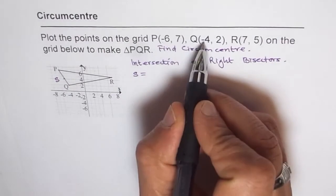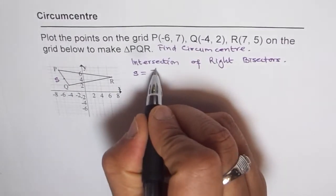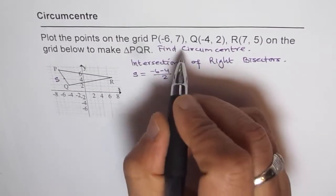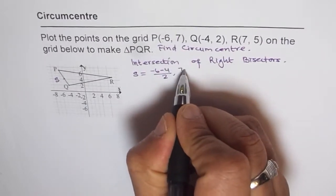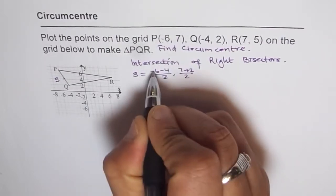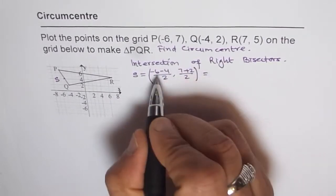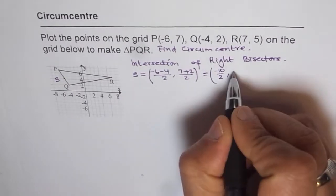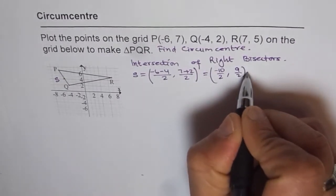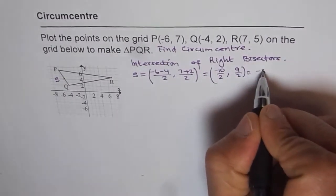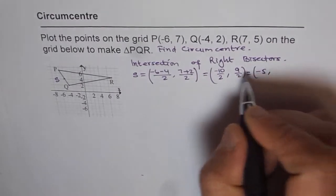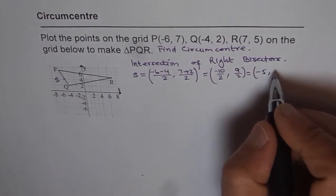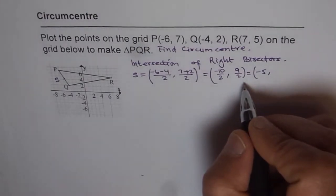The x-coordinate of midpoint S is (-6 + (-4)) / 2 = -10 / 2 = -5. The y-coordinate is (7 + 2) / 2 = 9/2, which is 4.5. So we can write it as 9/2 for now. The midpoint S is (-5, 9/2).